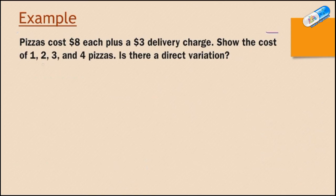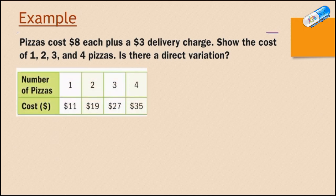Let us look at this example. Pizzas cost $8 each plus a $3 delivery charge. Show the cost of 1, 2, 3, and 4 pizzas. Is there a direct variation? So we will make this table. This is the number of pizzas: 1 pizza, 2, 3, 4 pizzas. And this is the cost for each of them. We know that the cost for each one is $8 plus a $3 delivery charge. For the first one, you have one pizza, so you're going to multiply 8 times 1 and add the $3 charge. So 8 multiplied by 1 is 8, plus 3 is 11.